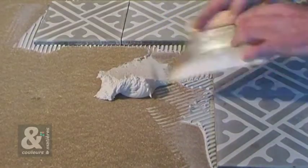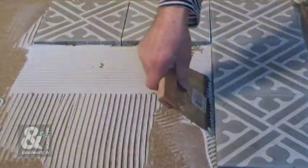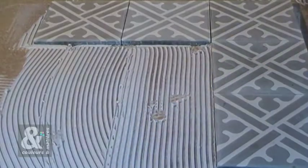Gluing. Apply the adhesive with a comb or spatula with broad square teeth, 6 to 9 mm, depending on the irregularity of the support.